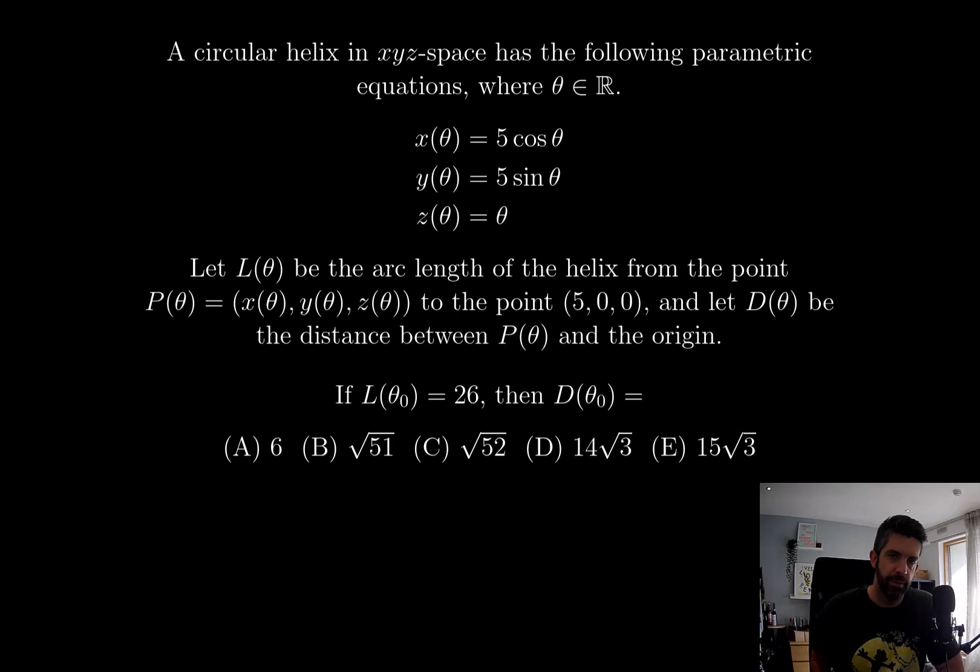Let L theta be the arc length of the helix from the point P theta to the point 5, 0, 0. And let D theta be the distance between P theta and the origin. If L theta naught equals 26, then D of theta naught is equal to one of these options.